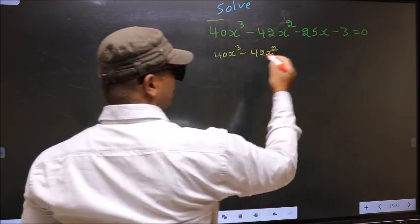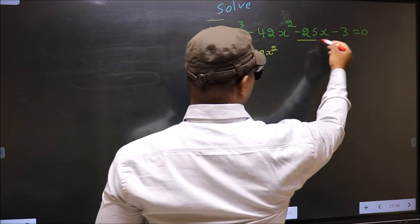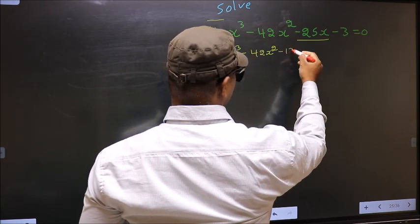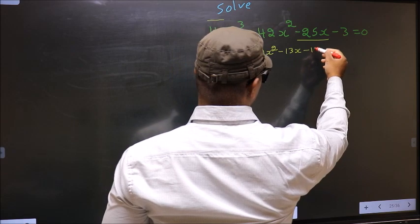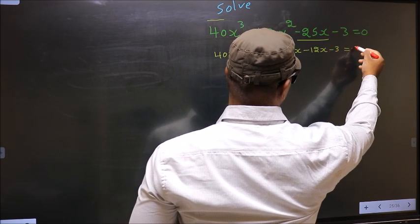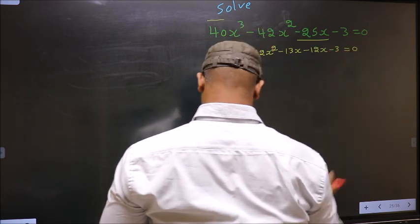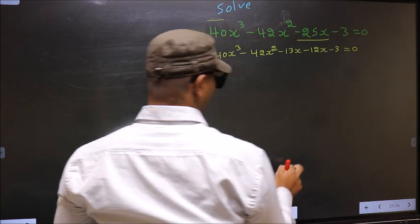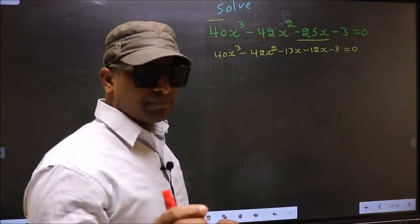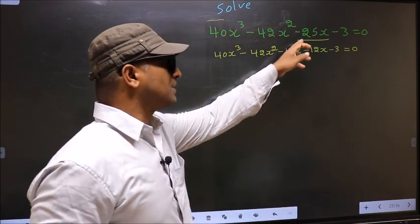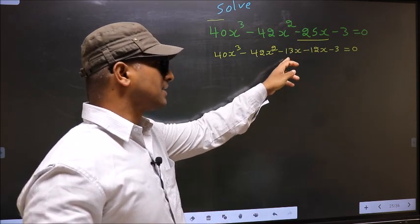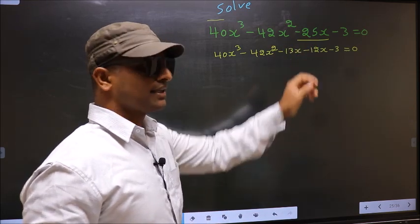In place of minus 25x, now I write minus 13x minus 12x minus 3 equal to 0. In place of minus 25x, I have written minus 13x minus 12x.